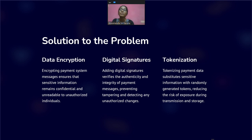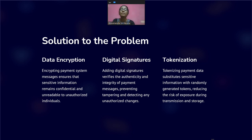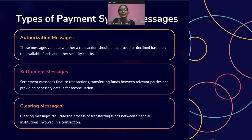Now we are going to discuss authorization messages, request and response, and settlement messages, confirmations, which are required as part of the solution for this problem. And clearing messages, request confirmation — these different types of payment system messages play a crucial role in the authorization, settlement, and clearing process, ensuring that payments are secure, funds are processed and transferred accurately, and transaction data is properly accounted for within the economic ecosystem.